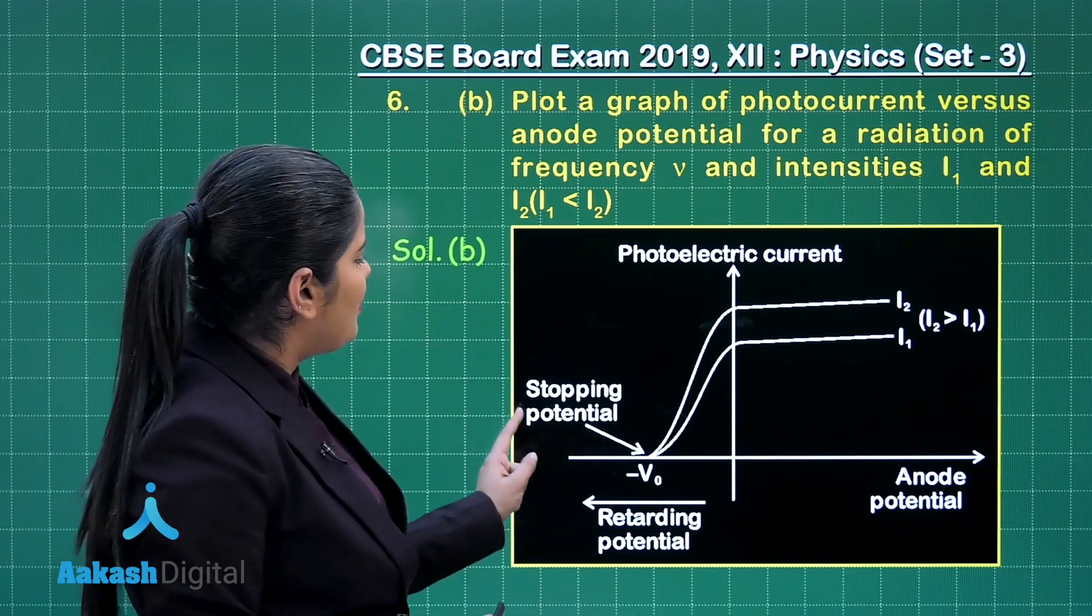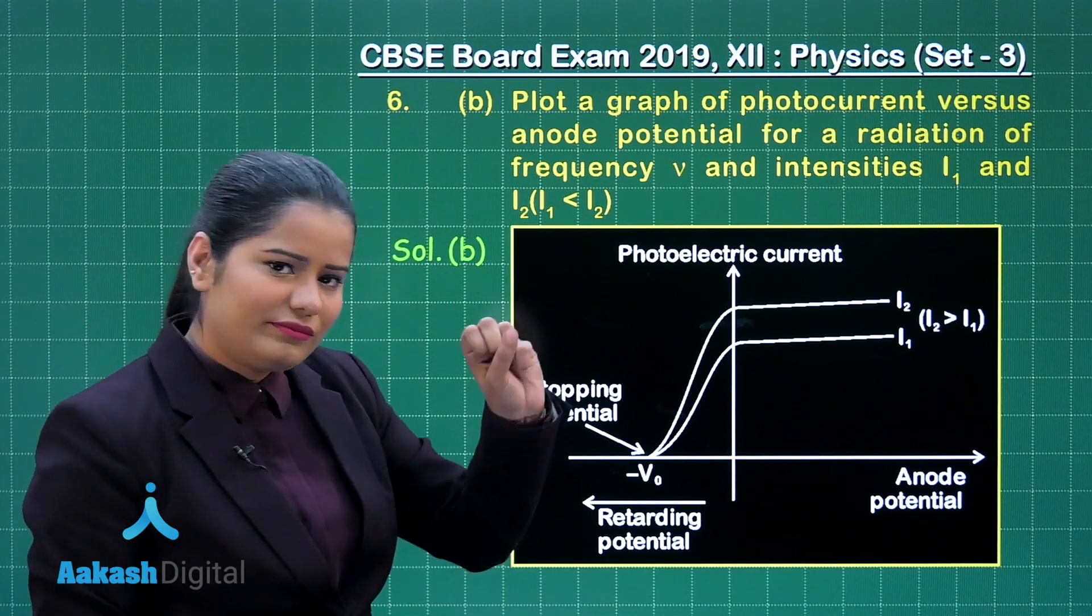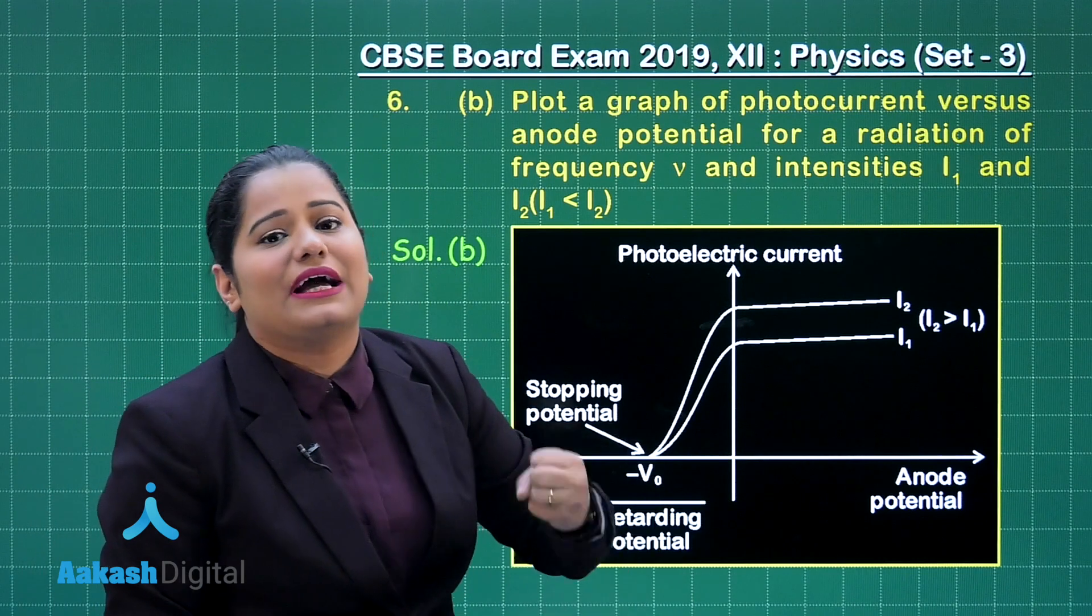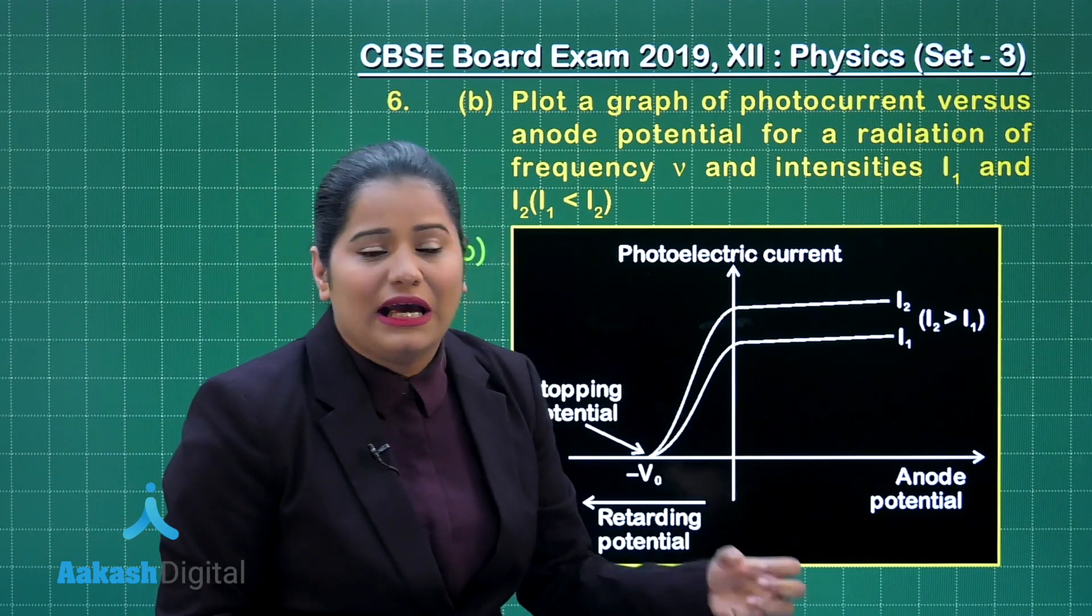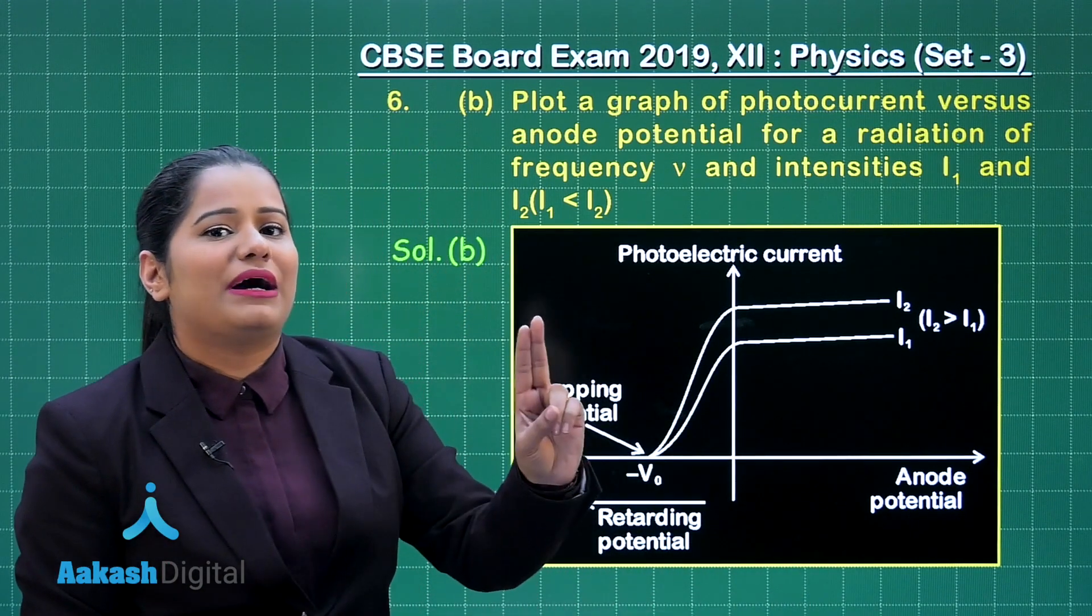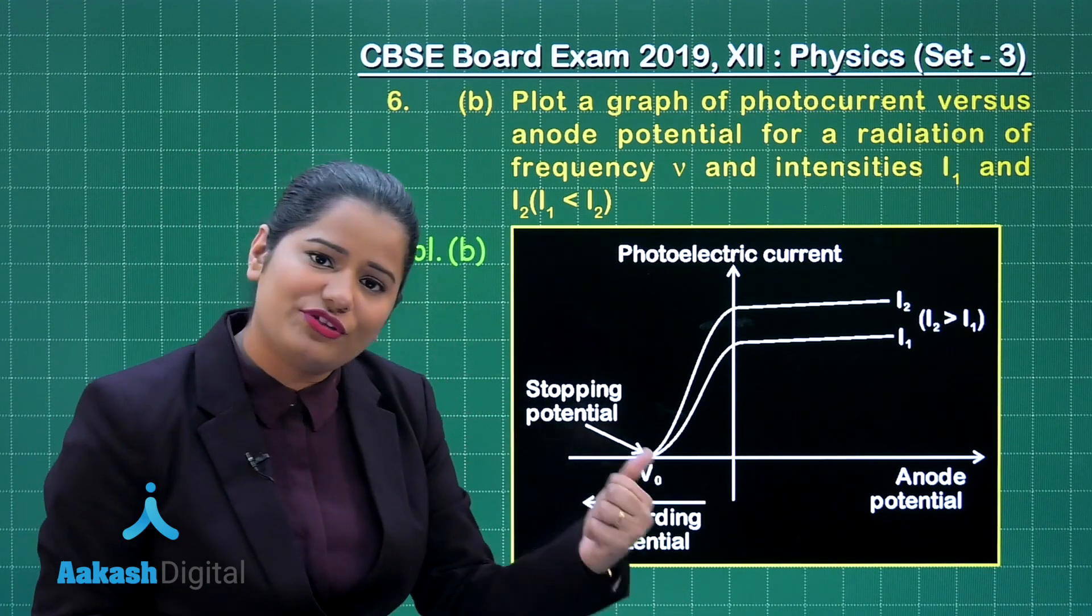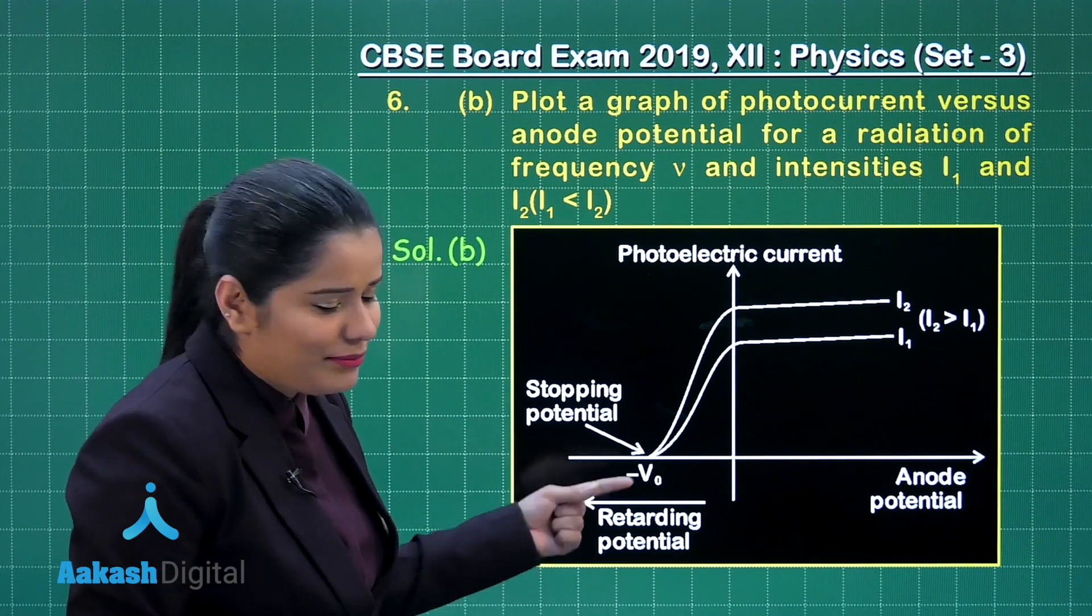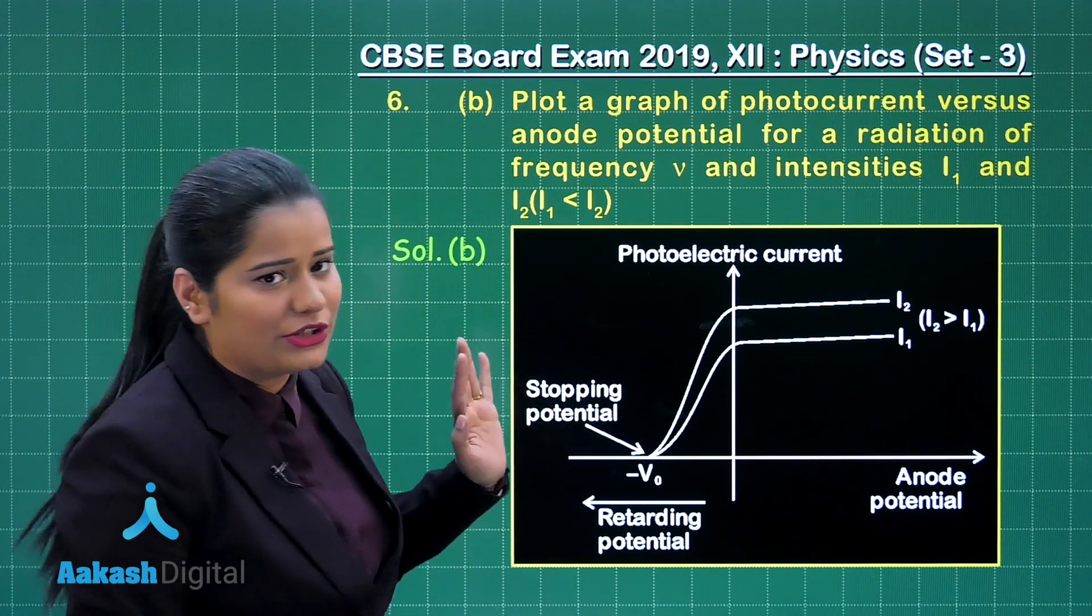While on the other hand if we talk about the stopping potential, it is decided by the maximum kinetic energy that the electron is having and the maximum kinetic energy will be decided by the frequency of radiation because frequency of radiation is remaining the same and hence the stopping potential is going to be the same.